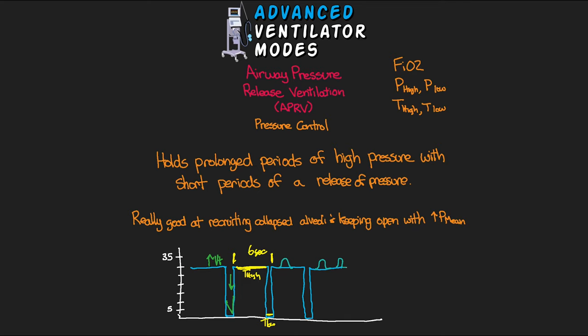Spontaneous breathing is actually very important in APRV because the exhalation time is very short, and patients who are not spontaneously breathing often don't have enough time to release all of their CO2, leading to an accumulation. APRV is fantastic for patients where we want to provide a lot of support for oxygenation — particularly ARDS patients — where having this high mean airway pressure really opens up alveoli and helps with gas exchange.